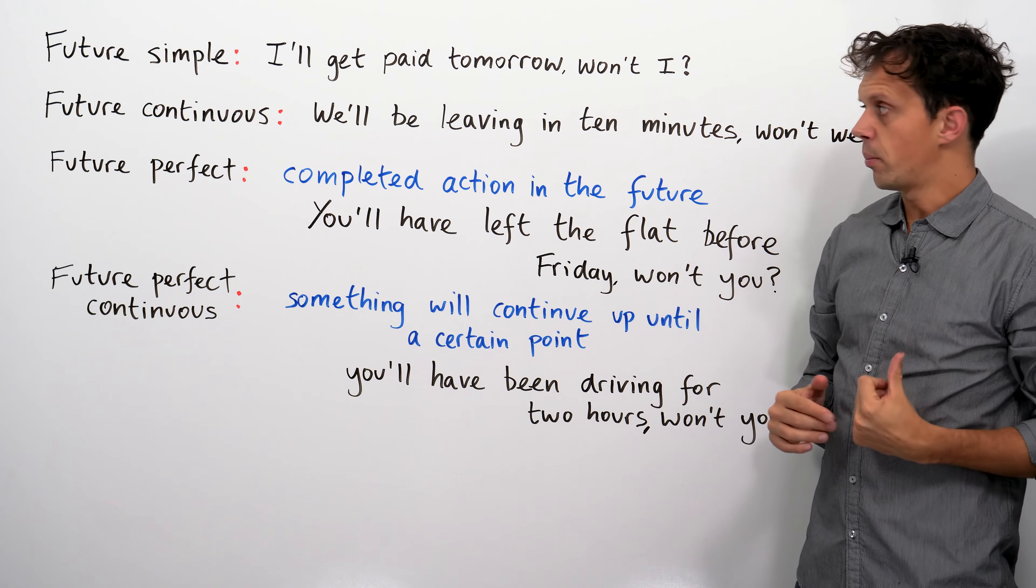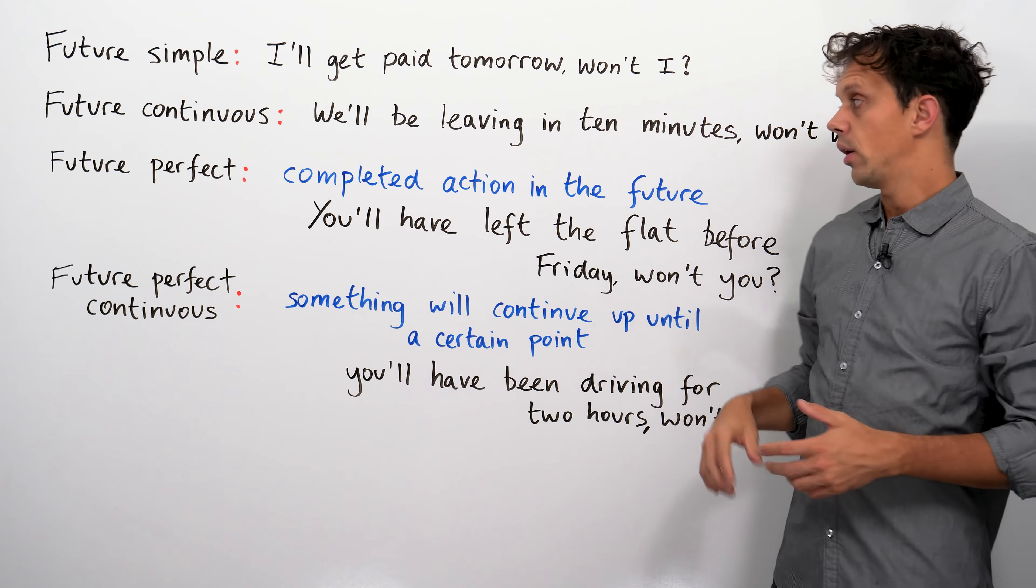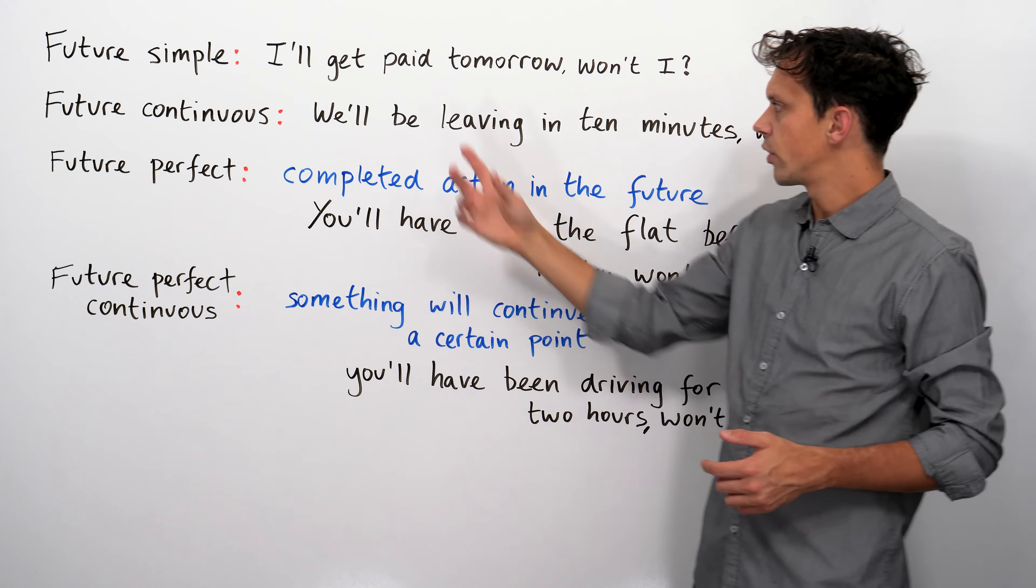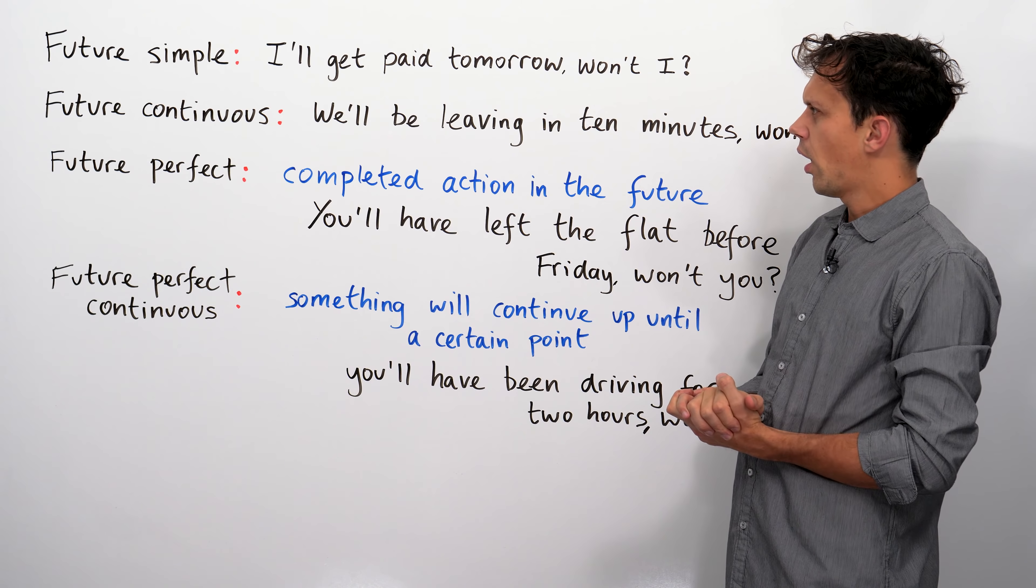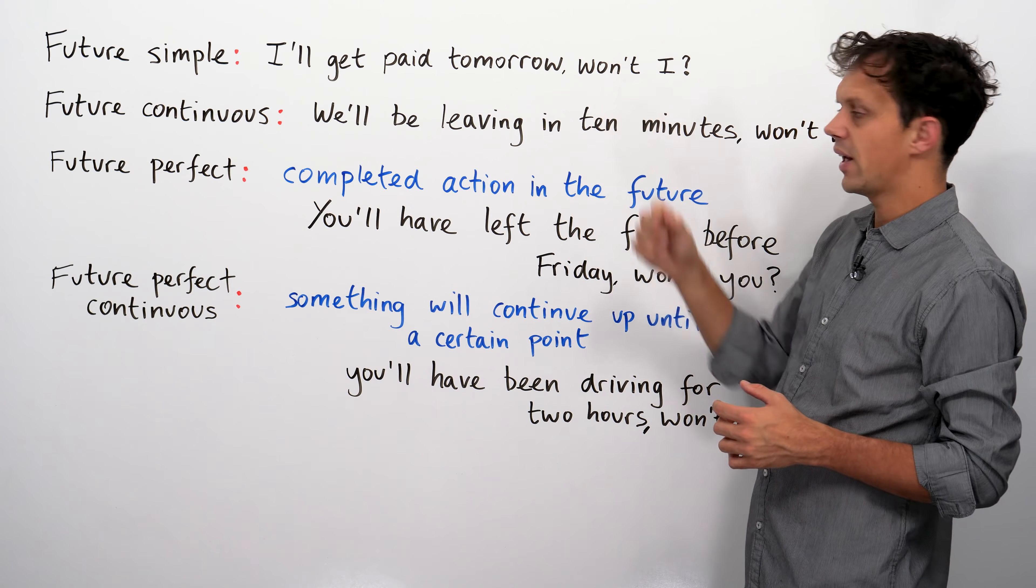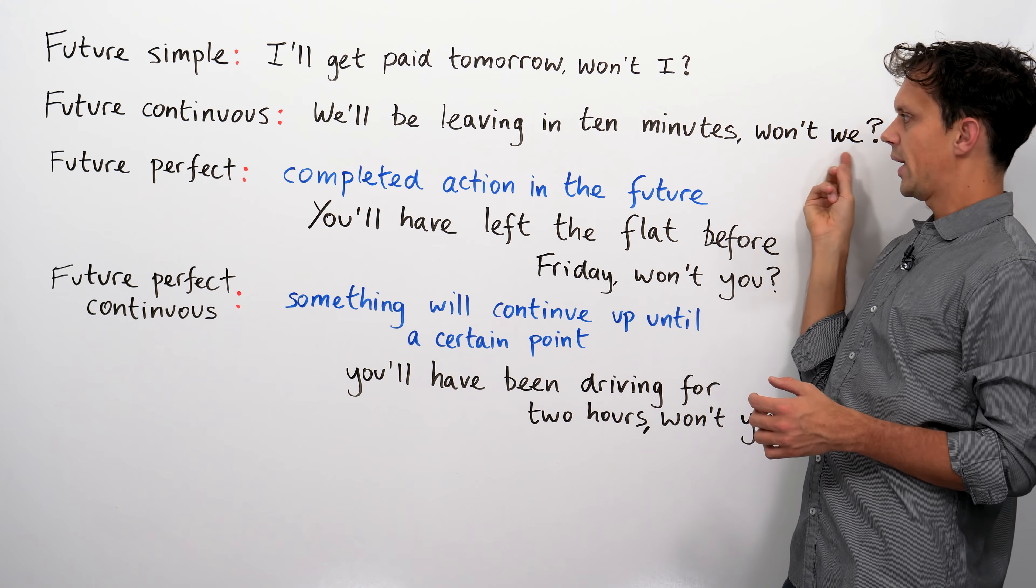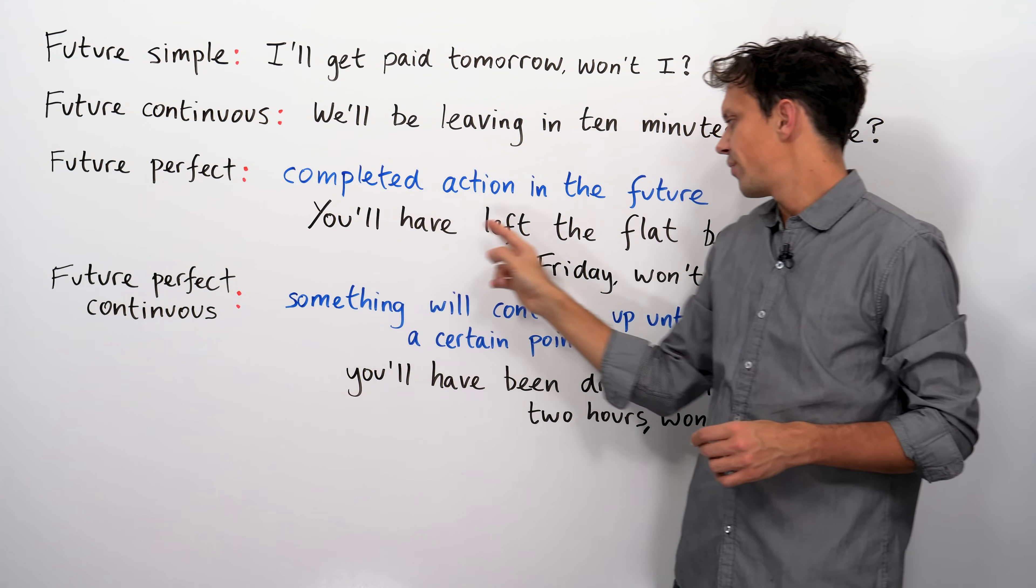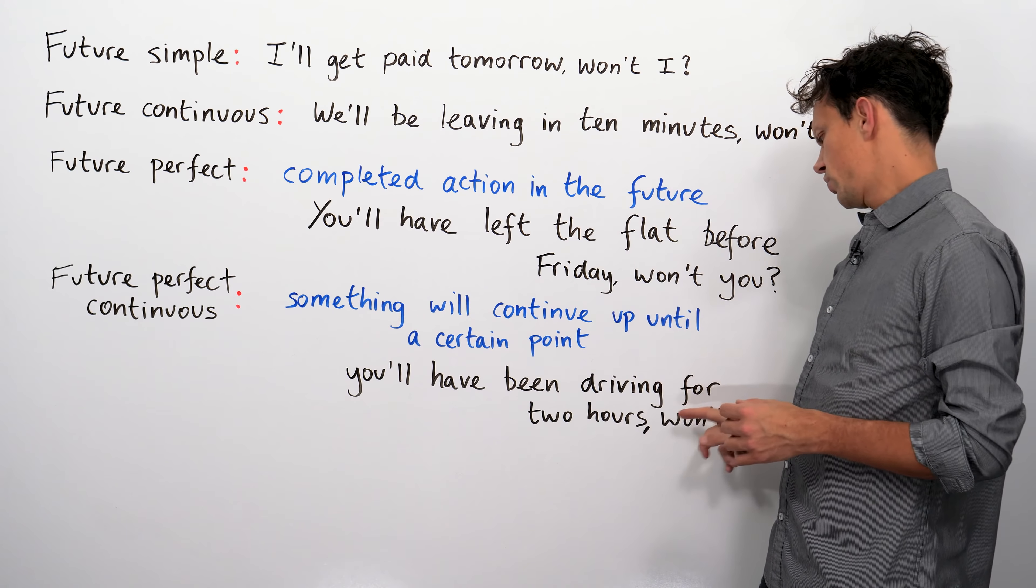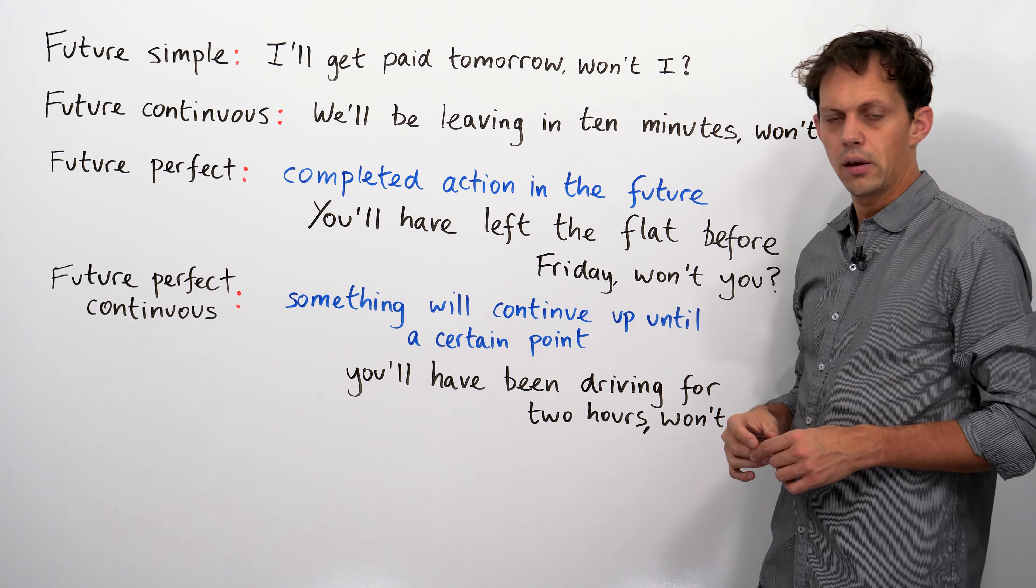Now, just with the present and with the past, we have had positive statements with the questions phrased in the negative. And just like here, we can flip it around. So, if we want to say this in the negative, we would have to say, I won't, instead of will, I won't get paid tomorrow. And the will goes here. Will I? We won't be leaving in ten minutes. Will we? You won't have left the flat before Friday. Will you? You won't have been driving for two hours. Will you? That note of surprise again when we change the construction around.